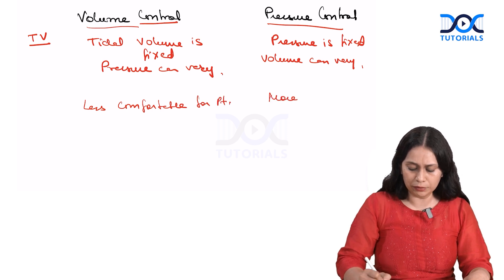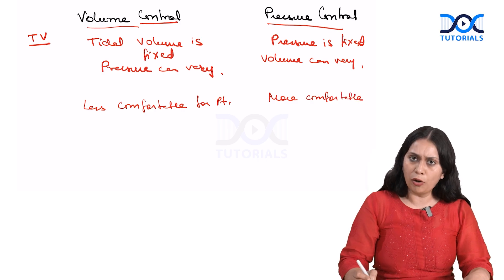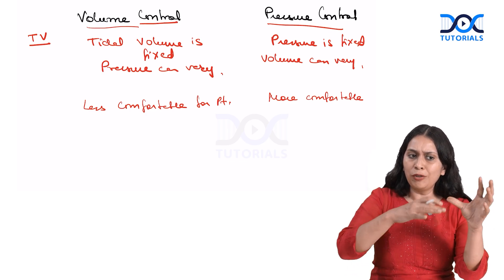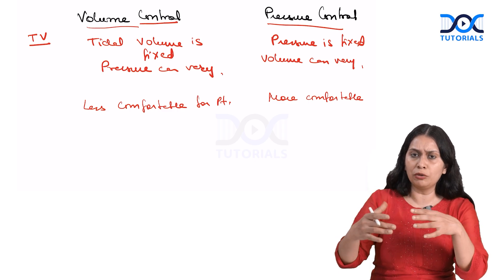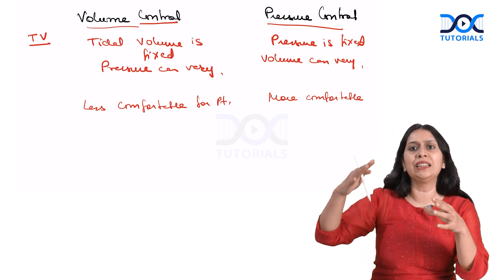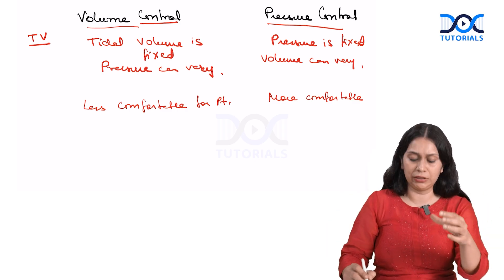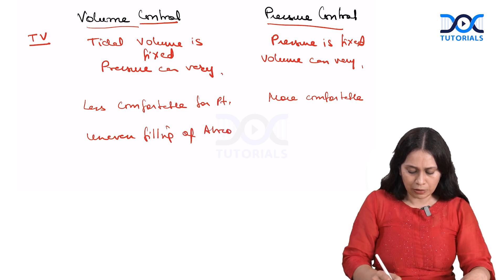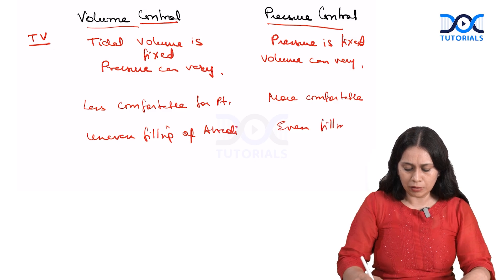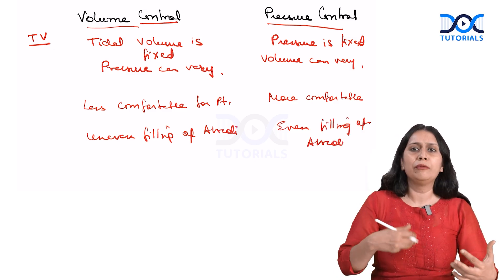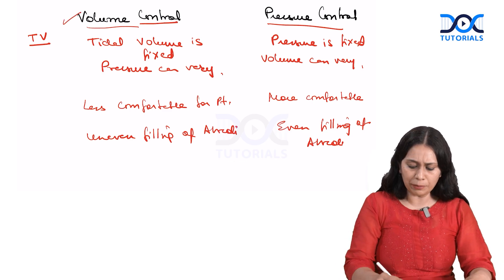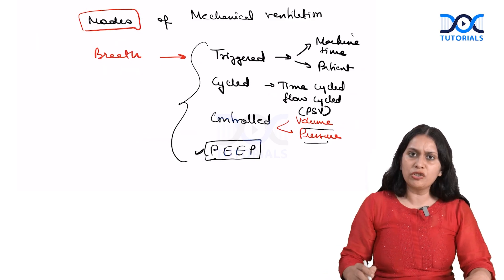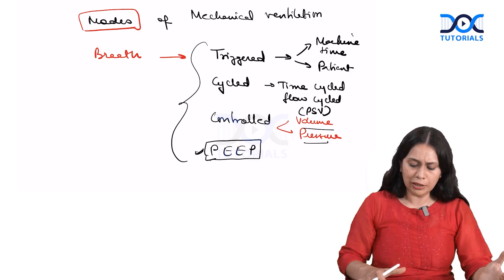In pressure control, flow is higher at the start of inspiration and then decreases, so alveoli are filled evenly. In volume control, because flow is constant throughout inspiration, alveoli are filled unevenly. However, neither is definitively better — some patients tolerate volume control better, some tolerate pressure control better. Either mode could be suitable. These features describe the breath, and how it is delivered determines the modes.